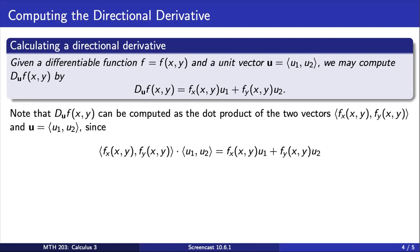Note that the directional derivative can be computed as the dot product of the following two vectors. The first vector has x component equal to the partial derivative with respect to x, and the y component equal to the partial derivative with respect to y. The second vector is u.